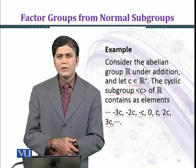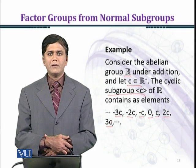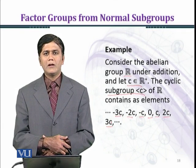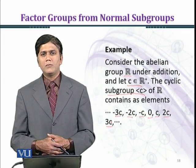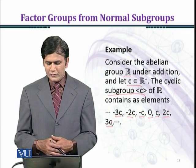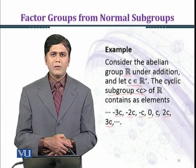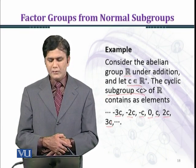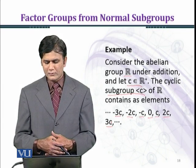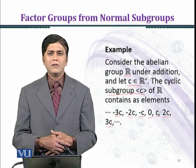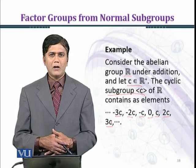With multiple 0, we get 0. Plus minus 1 gives minus c and c. Plus minus 2 gives 2c and minus 2c. Similarly, in this manner we can have all the multiples of c. The subgroup generated by c is the cyclic subgroup of the set of real numbers, and this is the additive subgroup of R.